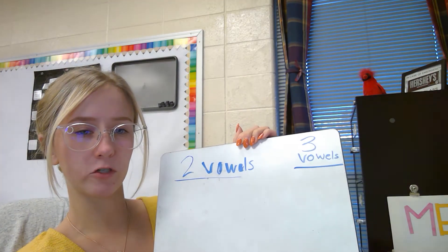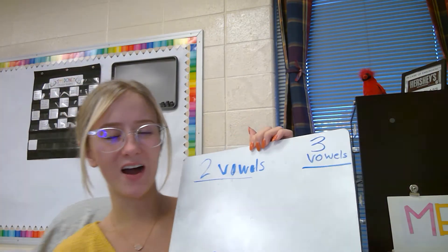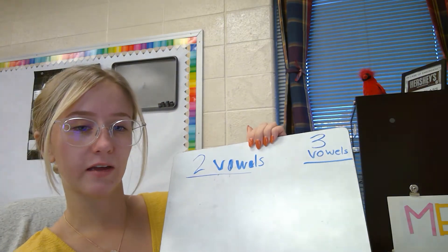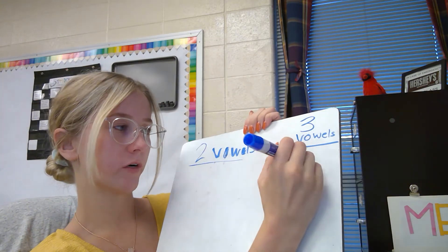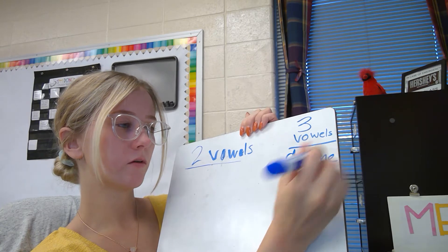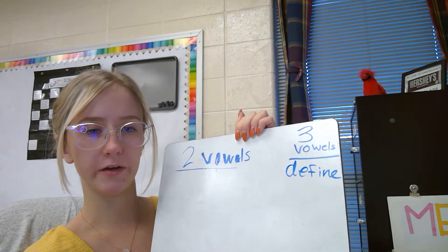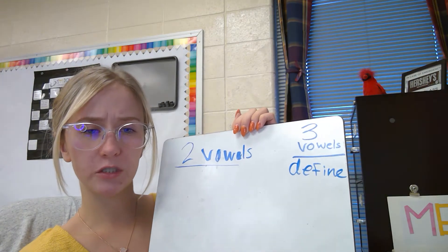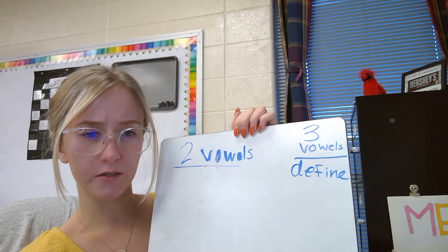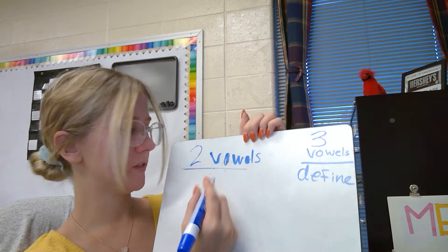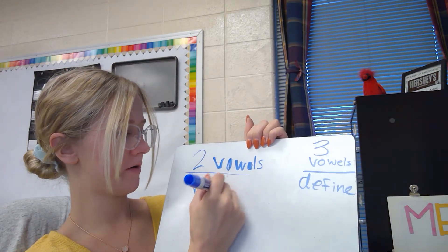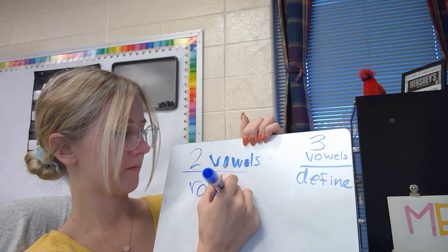Let's take a look at that first word — define. I see two e's and an i, so the word define would go in the three-vowel category. The next word is robot. I see two o's in the word robot, so I would put it in the two-vowel category.